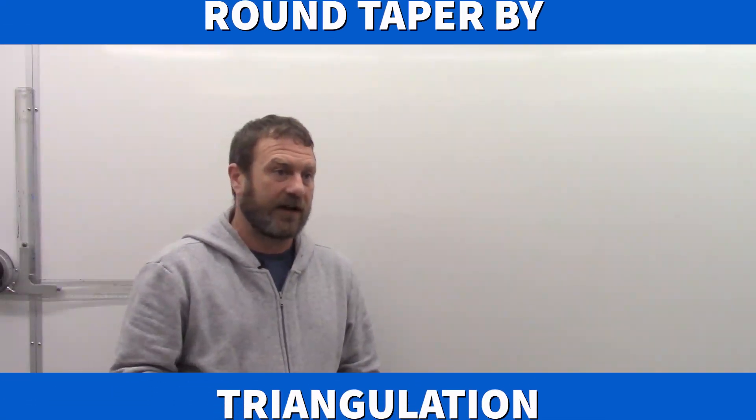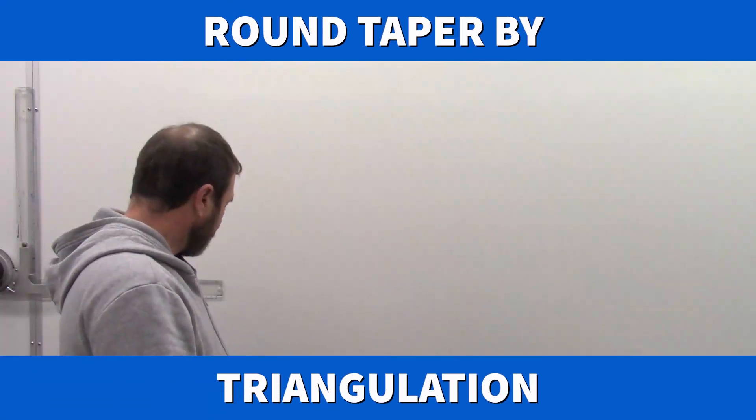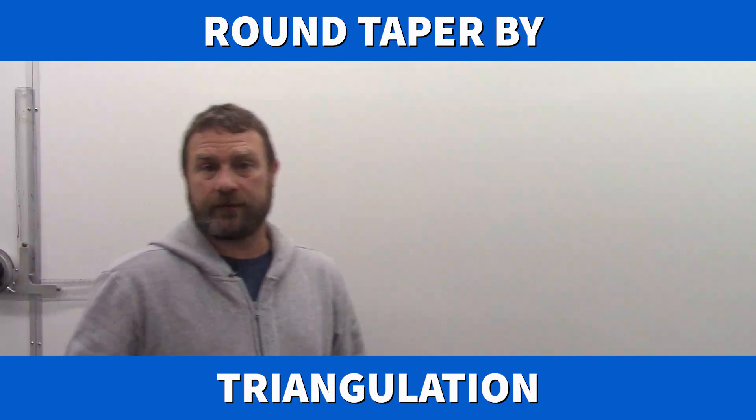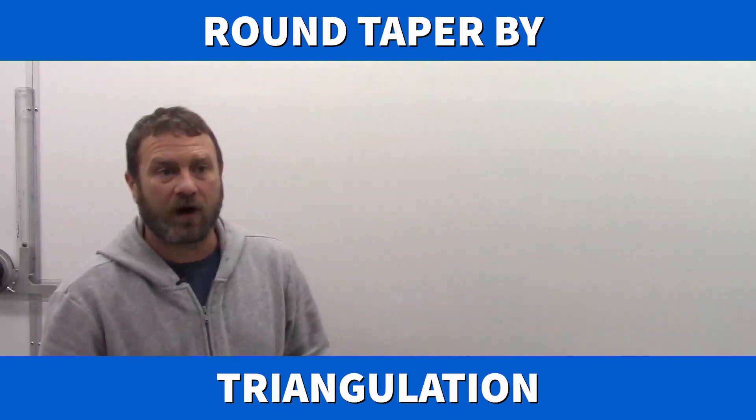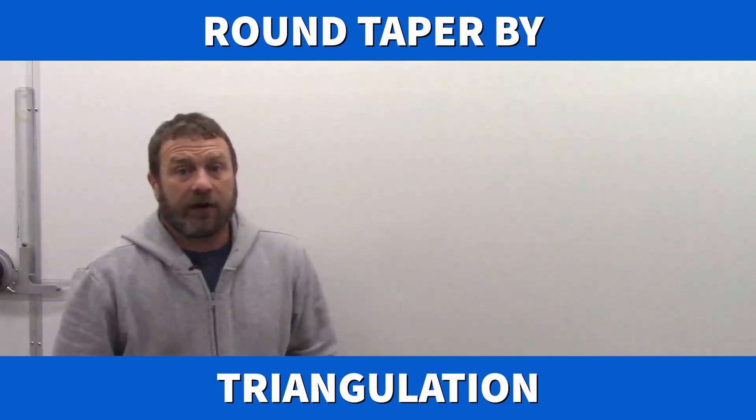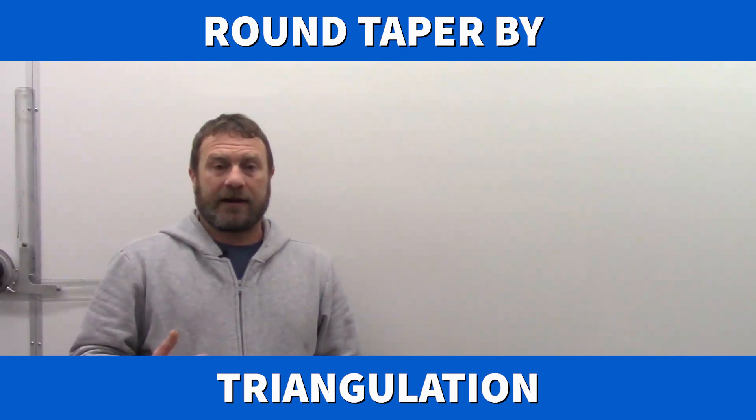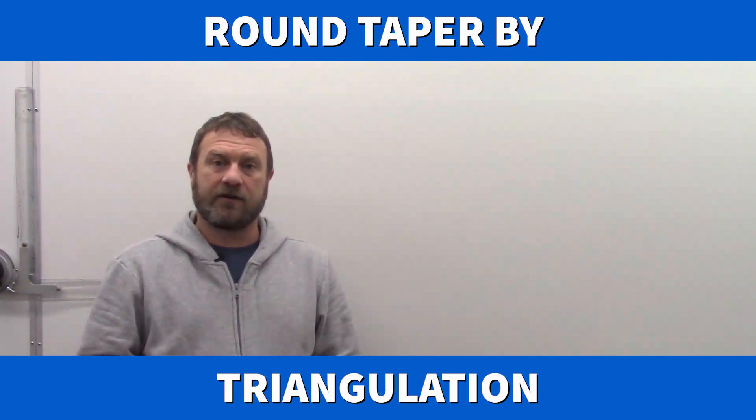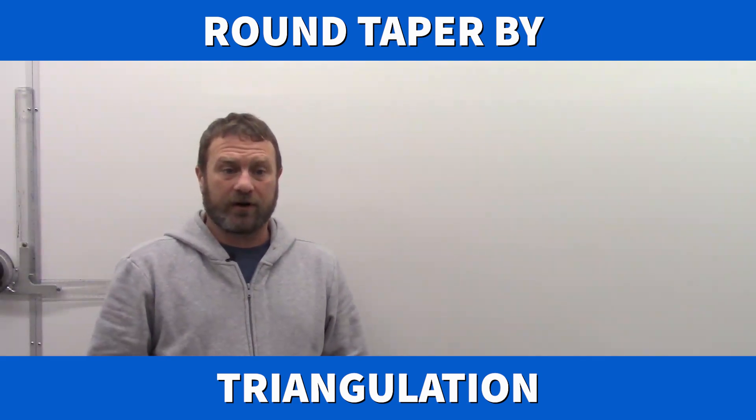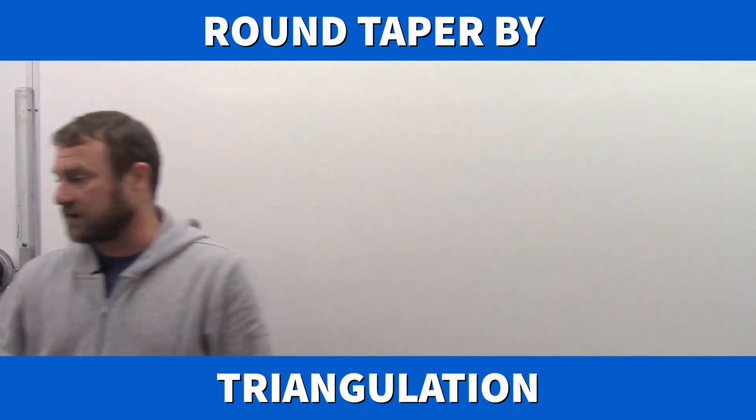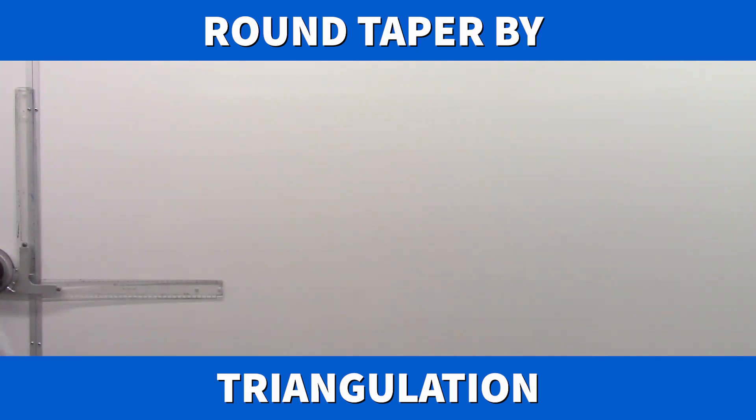Okay, good morning. We're going to carry on with our triangulation and in this video we're going to look at triangulating a round-to-round, a round taper of some sort, conical shape. This would be one where we've looked at radial line and some of the items that we need to use radial line won't work, and so in those cases we transfer to triangulation.